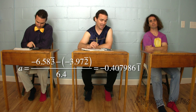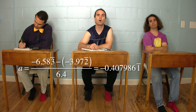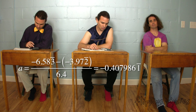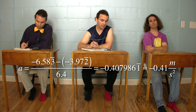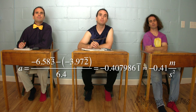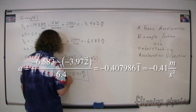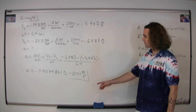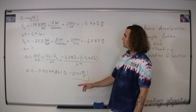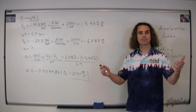That works out to be negative 0.4079861, and with two sig figs, that would be negative 0.41 meters per second squared. We get negative 0.41 meters per second squared — two sig figs because of the 6.4 seconds.